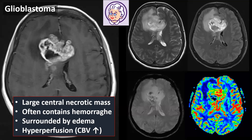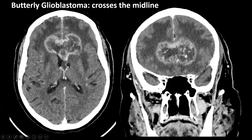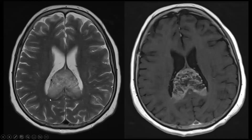The other main intra-axial tumour in adults is glioblastoma, which often presents as a large central necrotic mass, may contain hemorrhage visible on T2-star-weighted images, is often surrounded by oedema, and is associated with hyperperfusion on perfusion-weighted images. Glioblastomas can occur in various locations. So-called butterfly glioblastomas are located centrally in the corpus callosum, crossing the midline — this is not a typical location for metastases as it is not a watershed area.